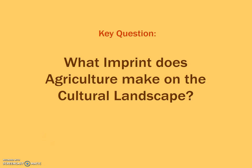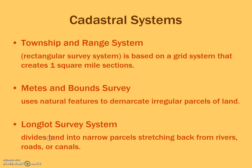Hi geography students, this is part two of the agriculture video lecture. We're going to take a little detour. We were doing the first, second, and third agricultural revolution. The last part of this chapter divides into two sections: the first is more about cadastral systems and village types, and the last part is more on agribusiness and the current trends in agriculture.